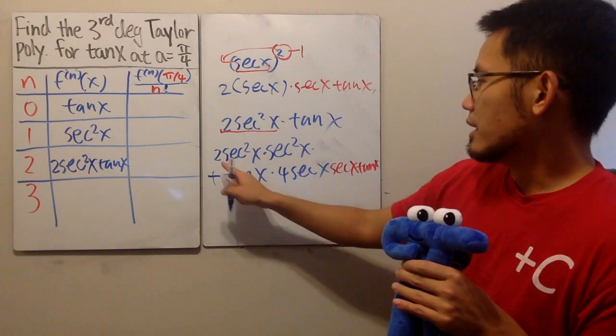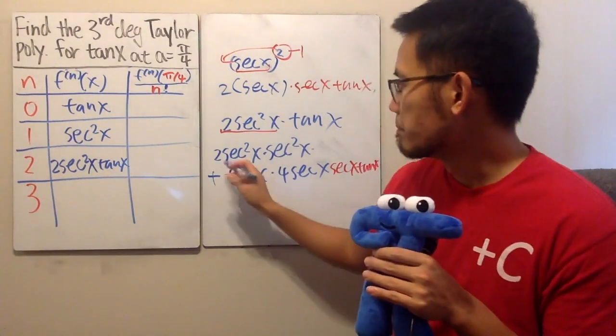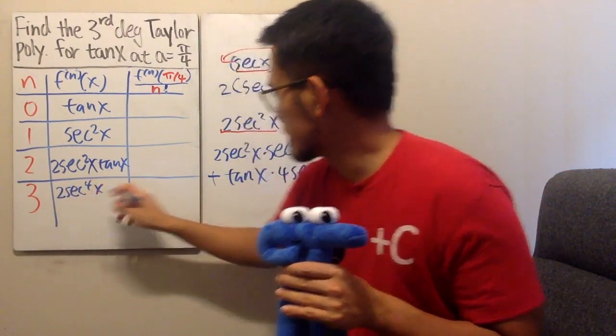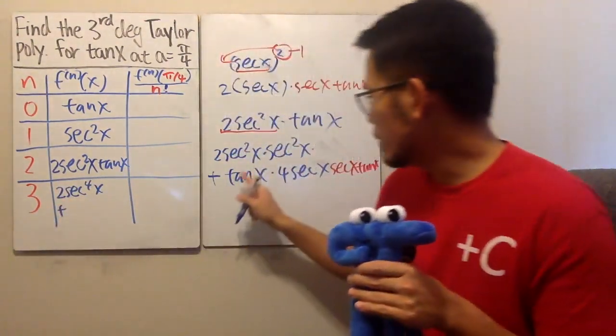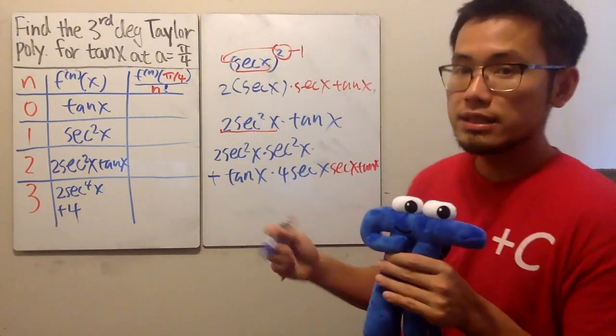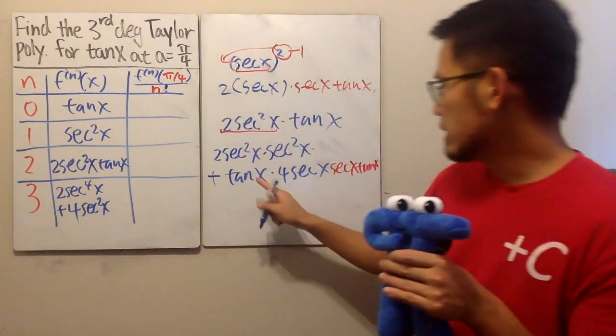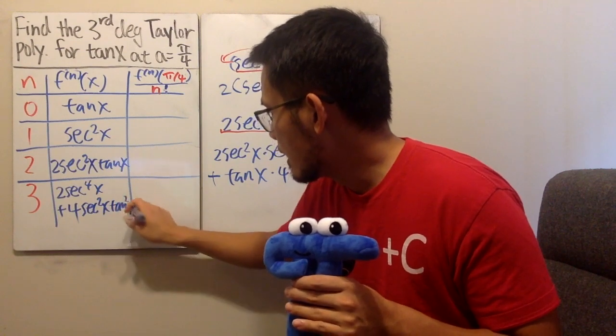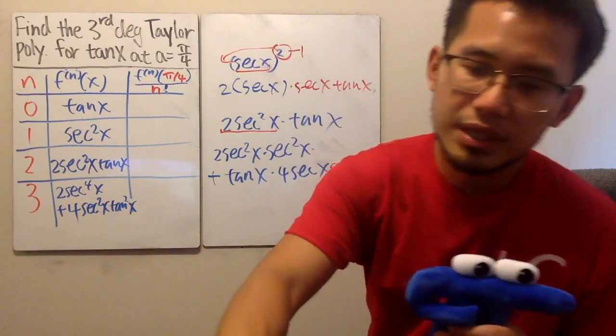Can we combine anything? Not so much, honestly. But we'll just write things down in a slightly more compact form. So, first we have 2 secant to the fourth power x, and then we add. Here we have 4, and we see the secant secant, so it's secant square x. And lastly, tangent tangent, we get tangent square x. So, in my opinion, it's pretty good.